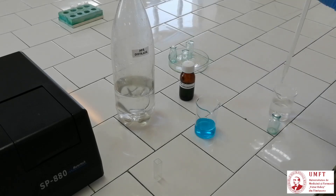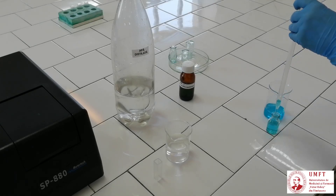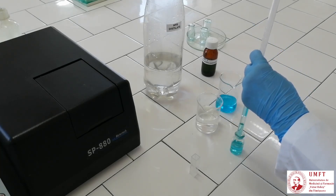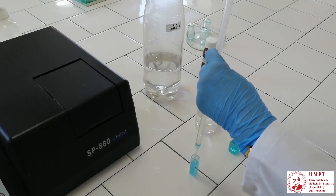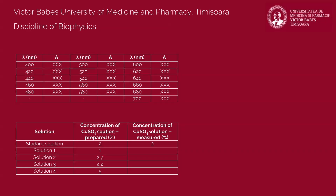Using a graded pipette, measure the volumes of the two solutions and mix them in a bottle. Using the same pipette, transfer the prepared dilution into a cuvette, which you will then place into the spectrophotometer. Read the concentration value shown on the display and write it in the second table. Repeat the steps to prepare the other three dilutions. Determine their concentrations and fill the remaining values in the table.